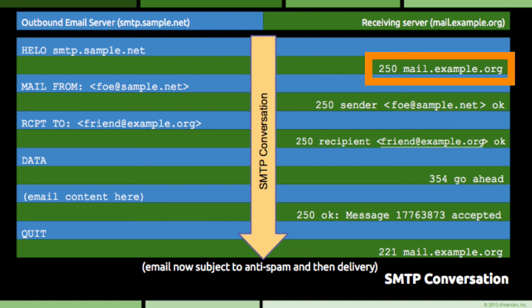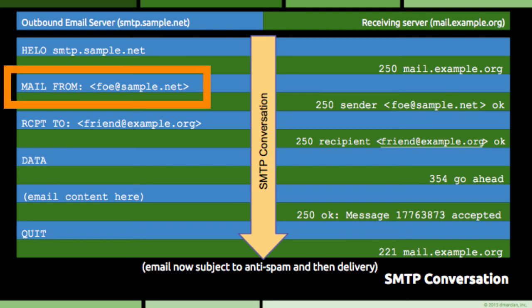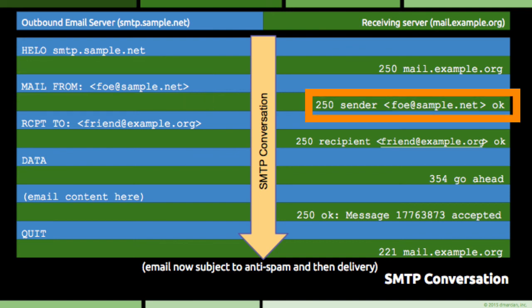In response to the hello command, the receiving server returns 250 and includes its own server name — like replying to 'hello, my name is outbound email server' with 'hi there, my name is receiving server, let's talk.' The outbound email server then expresses its desire to deliver email by telling the receiving server where the email is coming from. This is the MAIL FROM command, and we're using foe@sample.net in this example. In response, the receiving server sends a reply of 250 — this sender is okay in my book, go ahead.